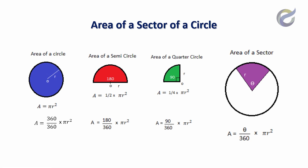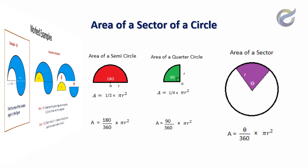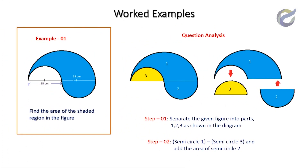In questions you will have to use this equation to find the area. The first example shows a diagram with three semicircles marked as 1, 2, and 3. You have to find the area of the shaded region by taking the largest semicircle, number 1, subtracting semicircle number 3, and then adding the area of semicircle number 2 to get the shaded region.